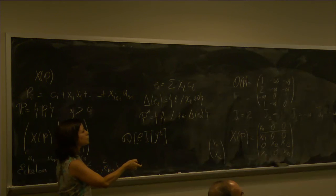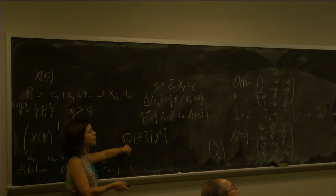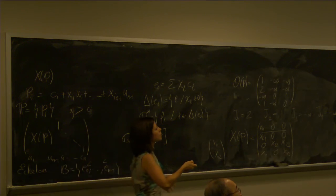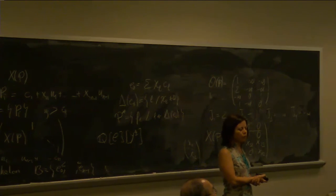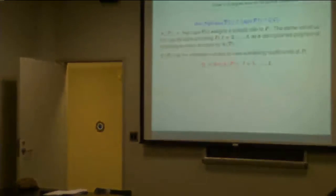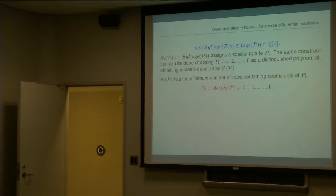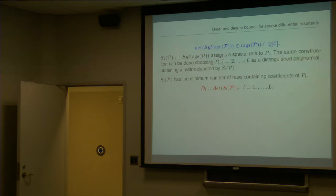Now we can use algorithms for computing the sparse algebraic resultant — those of Canny–Emiris or D'Andrea. The algorithm by Emiris, based on mixed polyhedral subdivision, gives sets of monomials λ₁ through λL — one set for each polynomial — and a total set. The matrix of the corresponding linear map is the Sylvester matrix of the generic system, and its determinant DL is non-zero. By giving a special role to the first polynomial, you get matrix S₁; giving a special role to P_L gives a different matrix SL. For each polynomial you get a different determinant DL. The GCD of those DL's is the algebraic resultant, which is the unique polynomial giving conditions for the system to have a common solution and generates the elimination ideal.